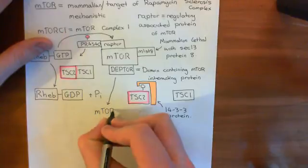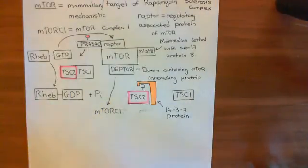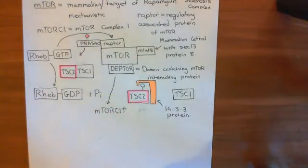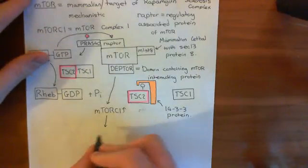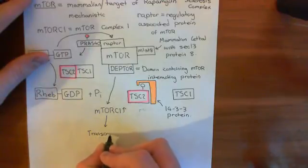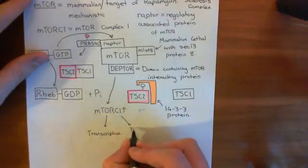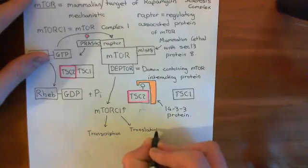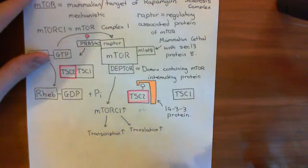So mTORC1 has become activated, and what it's going to do is increase transcription and translation of proteins. Transcription is going to go up and translation is going to go up. This happens when the cell moves from interphase of the cell cycle to the G1 phase.